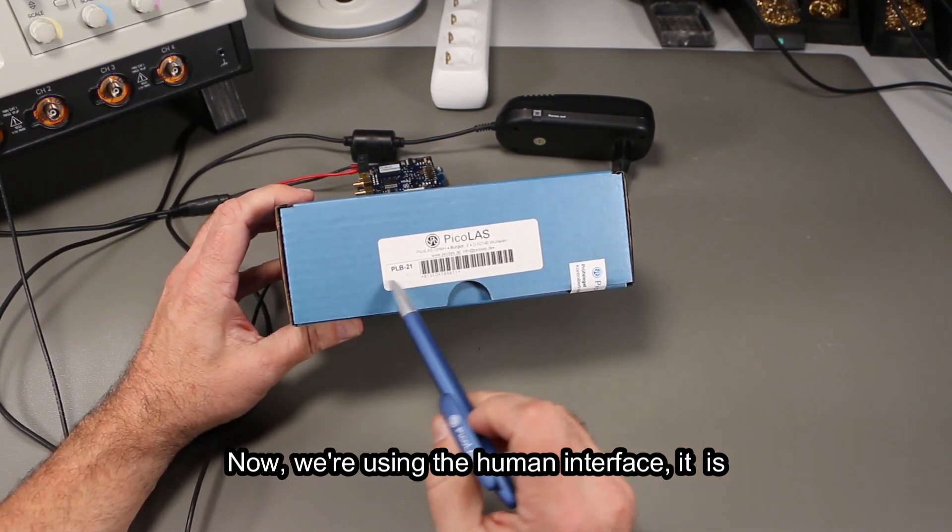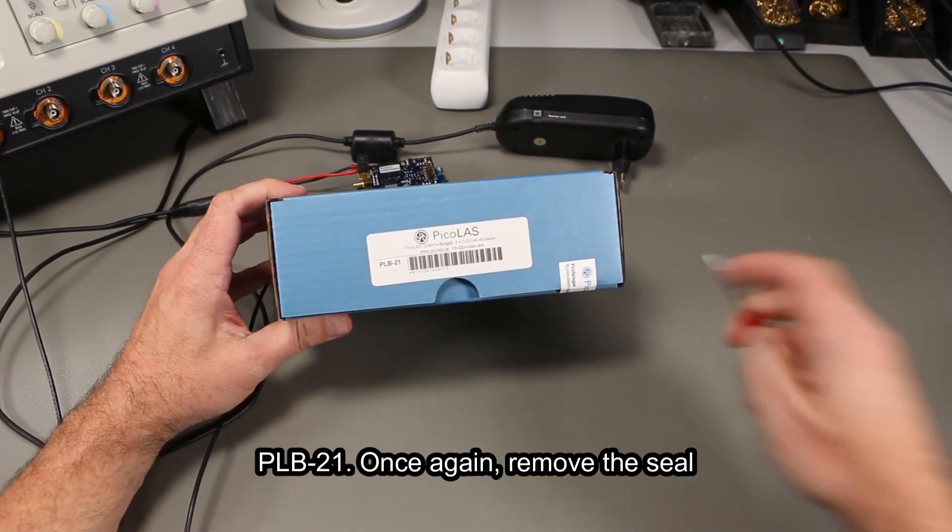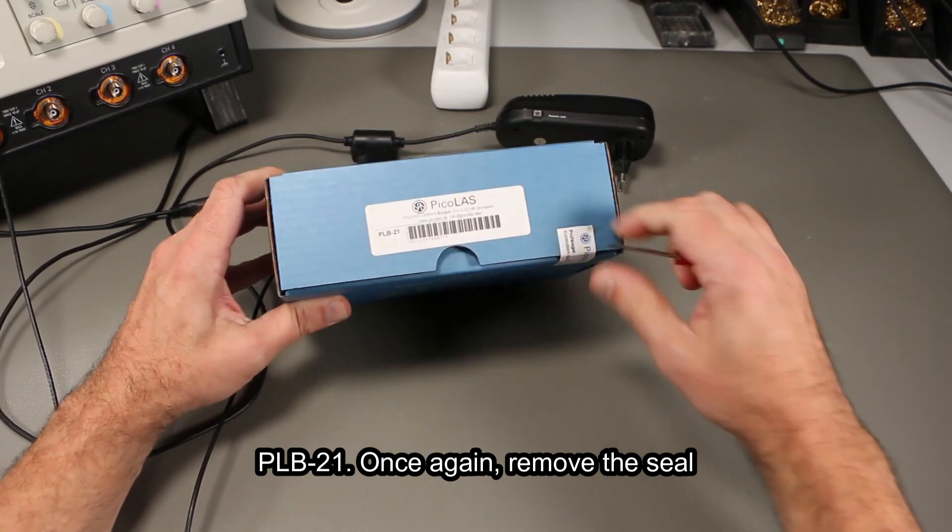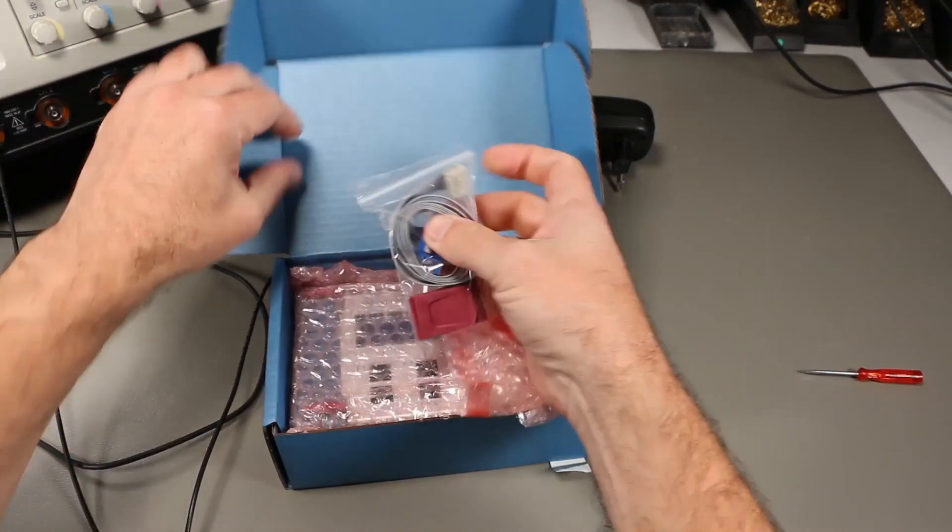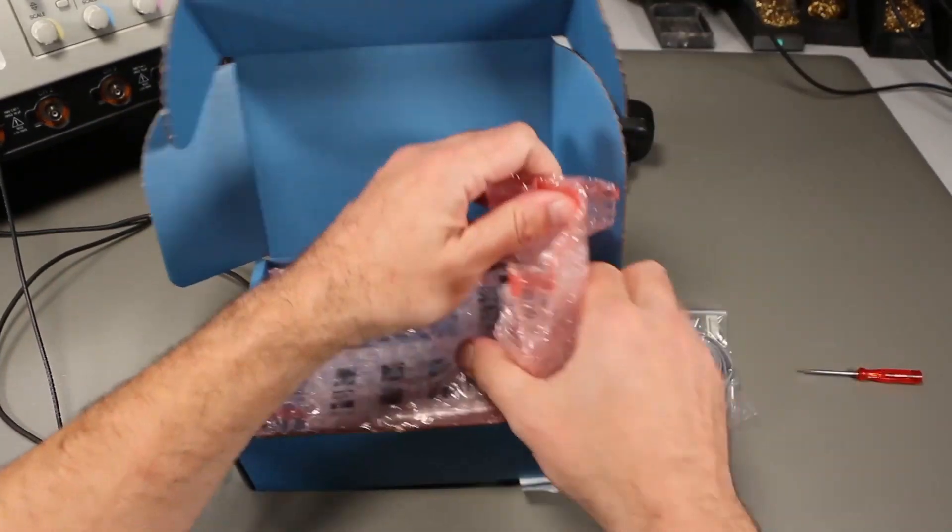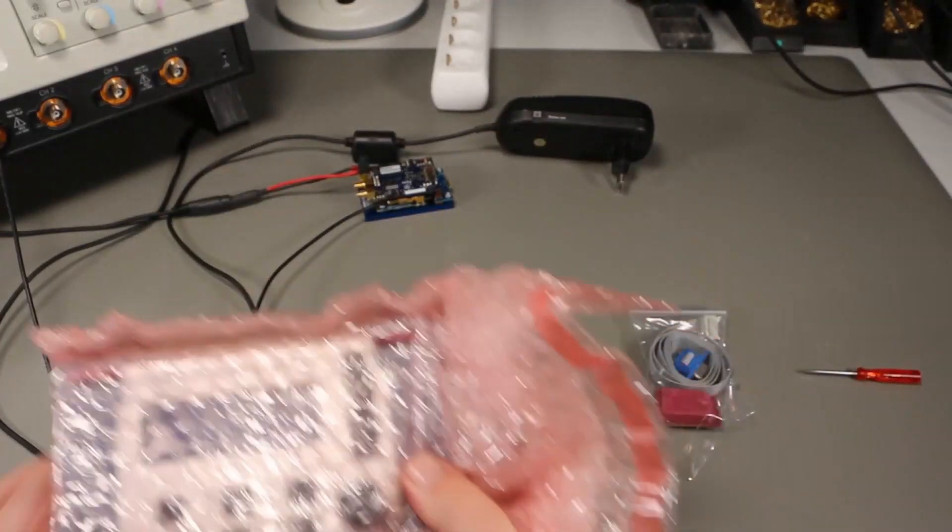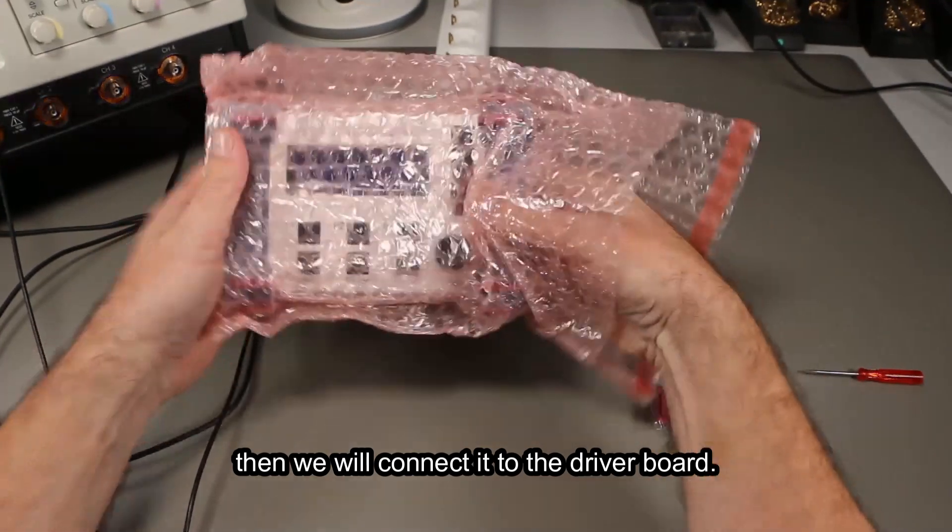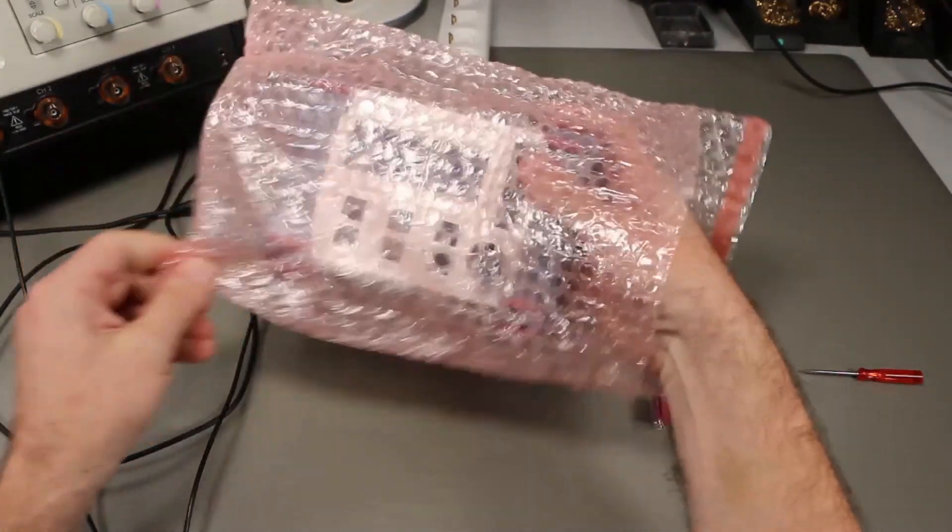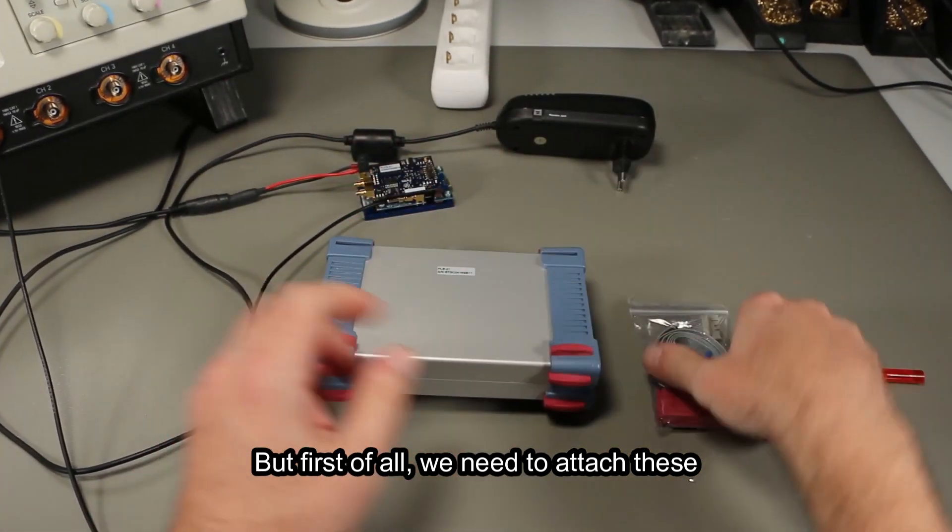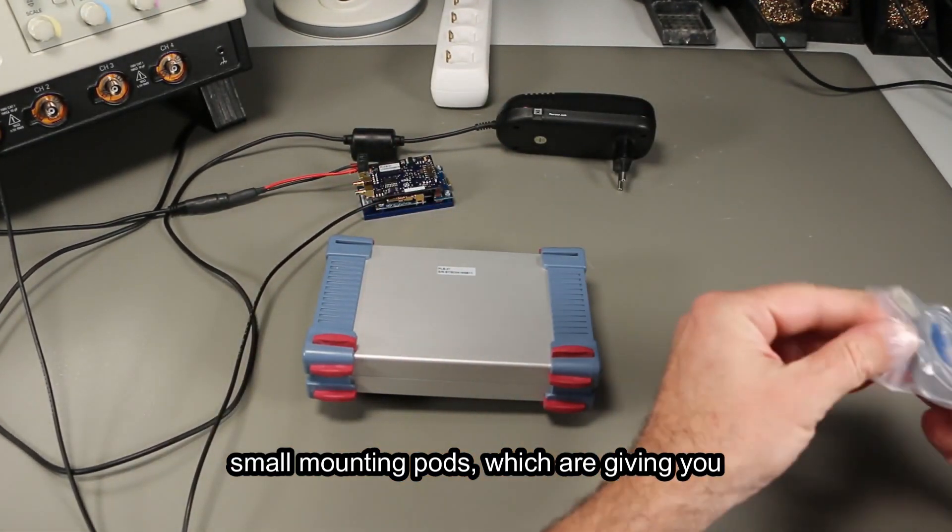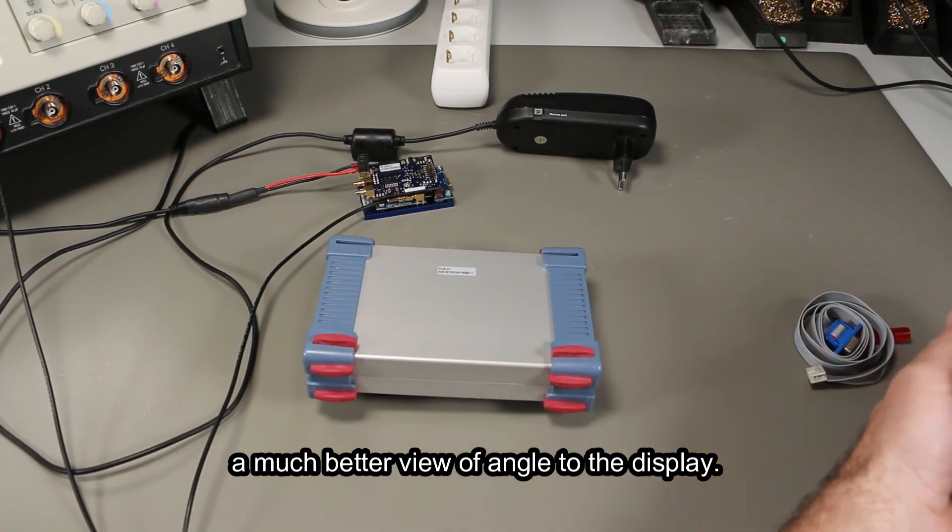Now we are using the human interface, the PLB21. Once again remove the seal, take out your device, unwrap it, and then we will connect it to the driver board. But first of all, we need to attach these small mounting ports which give you a much better viewing angle to the display.